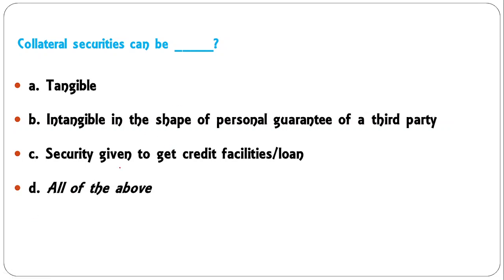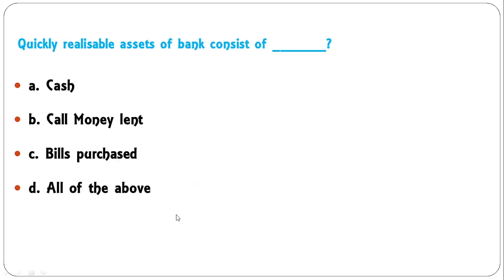Moving to the next: collateral securities can be tangible, intangible, in the shape of personal guarantee of a third party, security given to get credit facilities or loan, or all of the above? Collateral securities can be in any of these three forms, so all of the above is the correct answer.